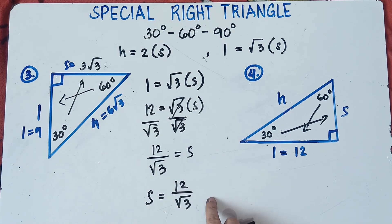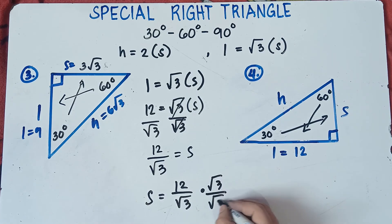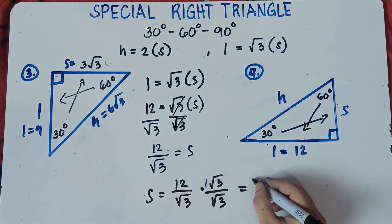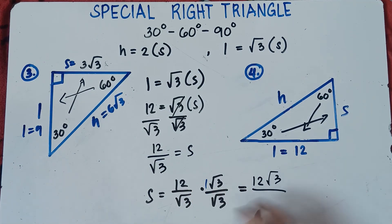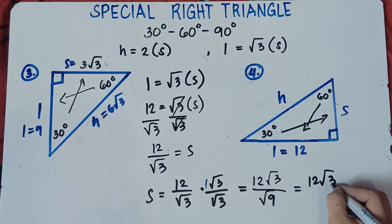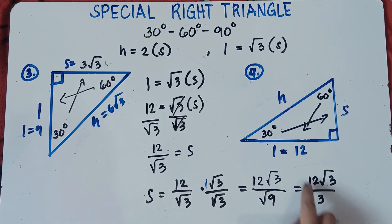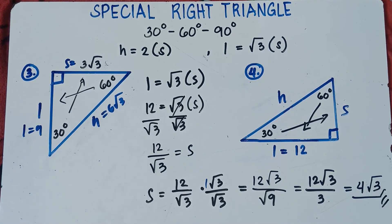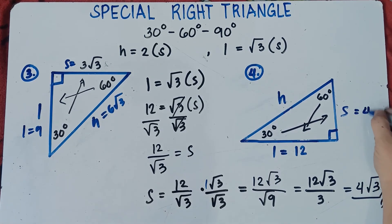To rationalize, multiply both numerator and denominator by √3: S = (12 × √3) / (√3 × √3) = 12√3 / √9 = 12√3 / 3. Dividing 12 by 3 gives 4, so the shorter leg is 4√3. If you want to learn more about rationalizing, the link will be in the description below.